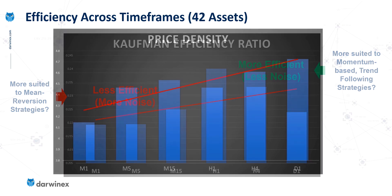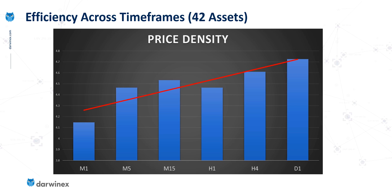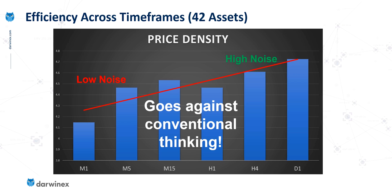This is where the big surprise comes in. When we do the same analysis using price density, remember that price density is interpreted in the opposite way to the efficiency ratio. High values represent high levels of noise. On the face of it, this is telling us that higher time frames experience higher levels of noise — which is completely the opposite of the generalized view of noise and time frames.